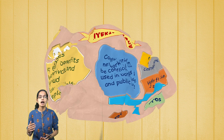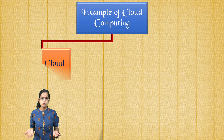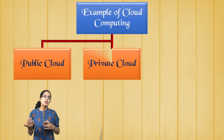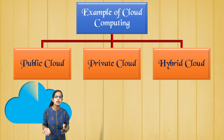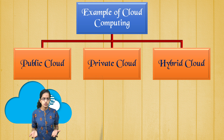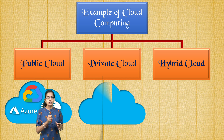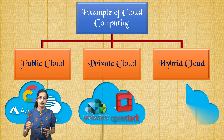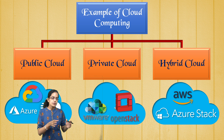Let's look at examples of each cloud type. For public cloud, Google Suite, Microsoft Azure, and IBM Cloud are common examples we use in day-to-day life. For private cloud, VMware and OpenStack are good examples where data is kept secure. For hybrid cloud, AWS (Amazon Web Services), Microsoft Azure, and specifically the Azure Stack are examples where the hybrid model has been used.